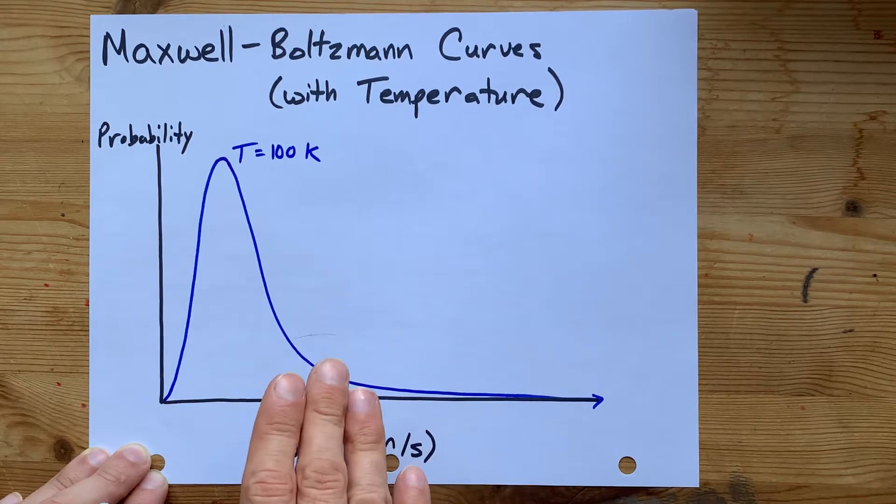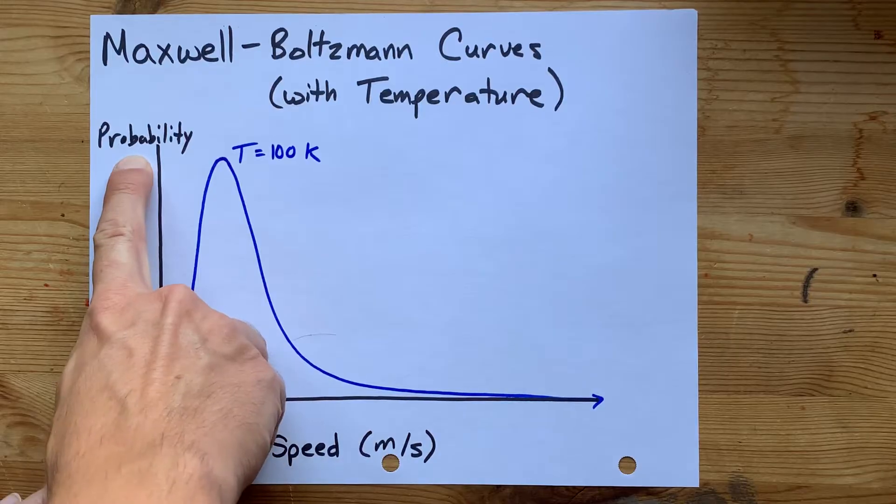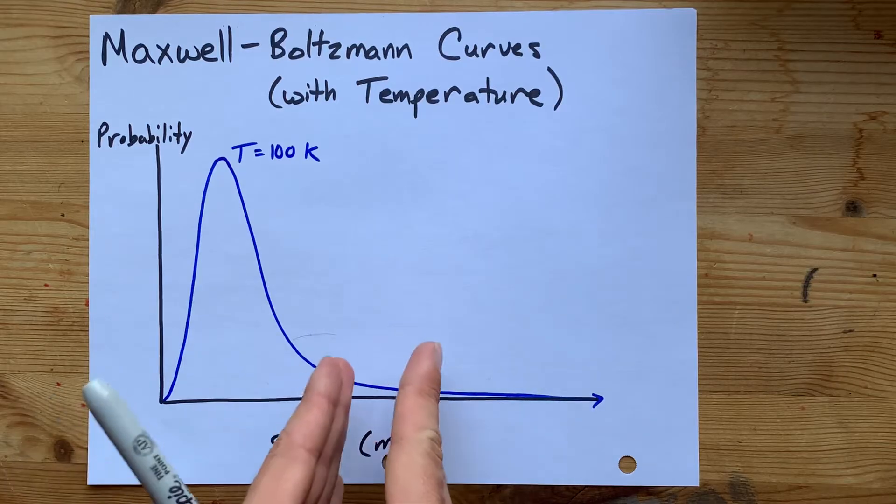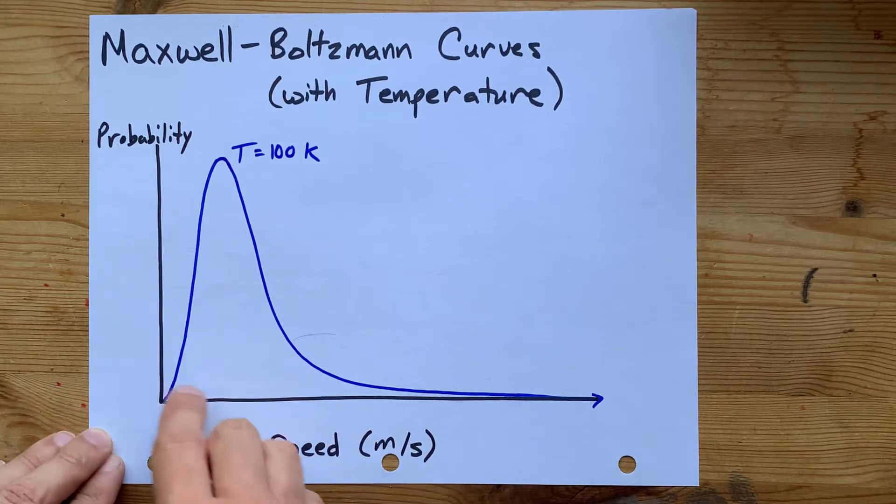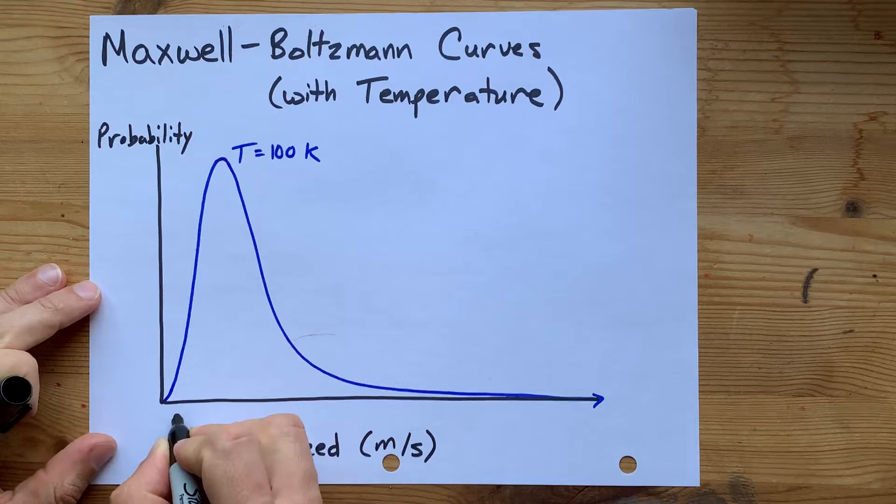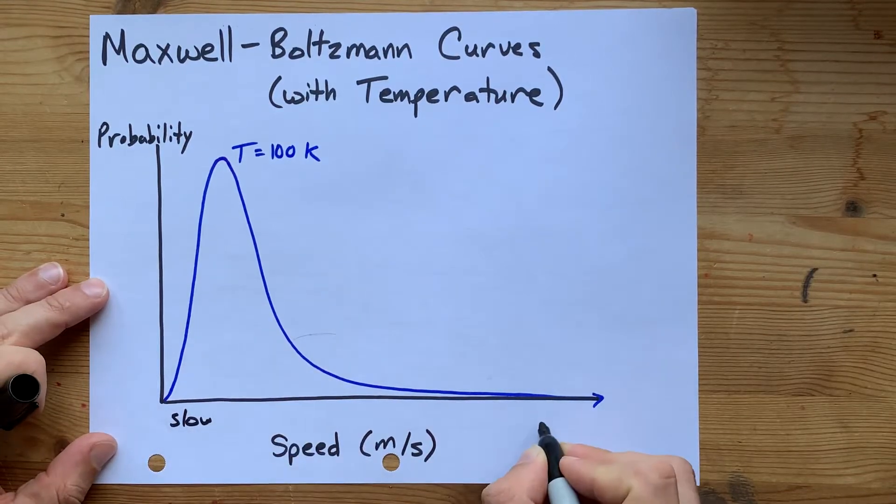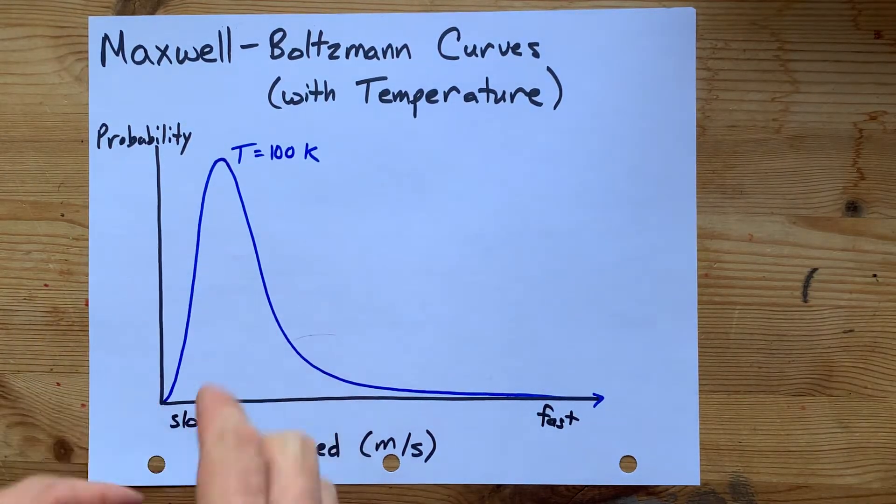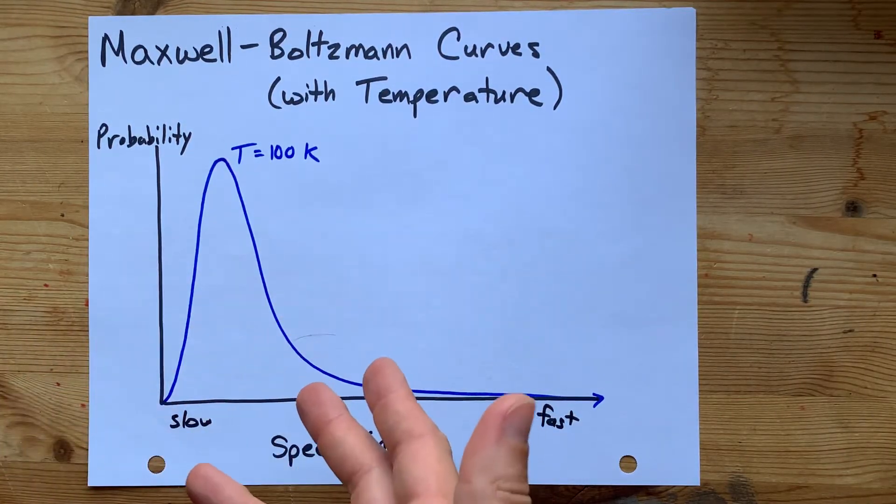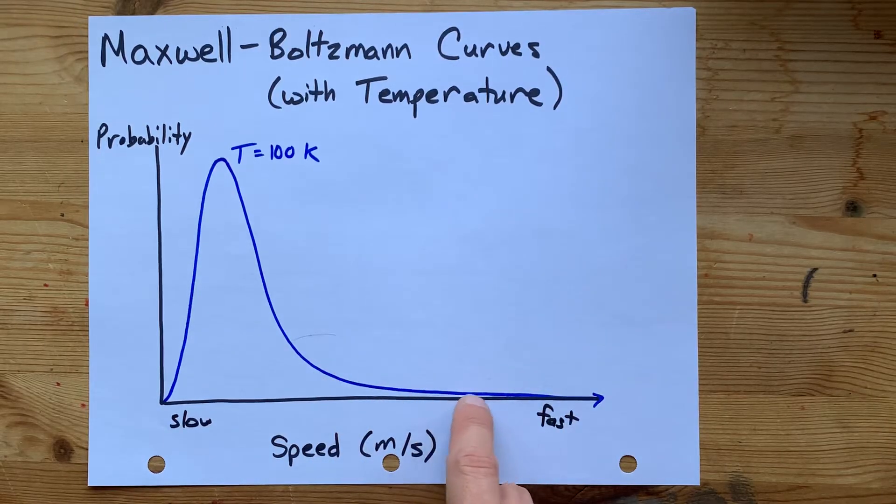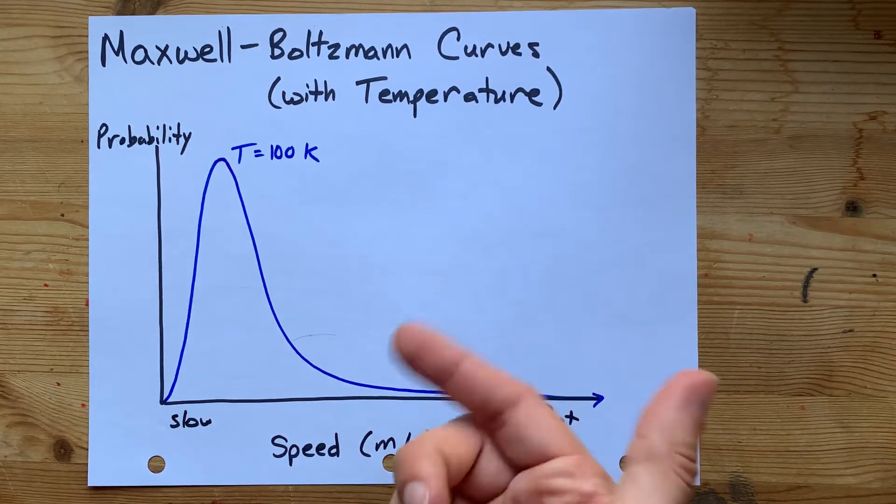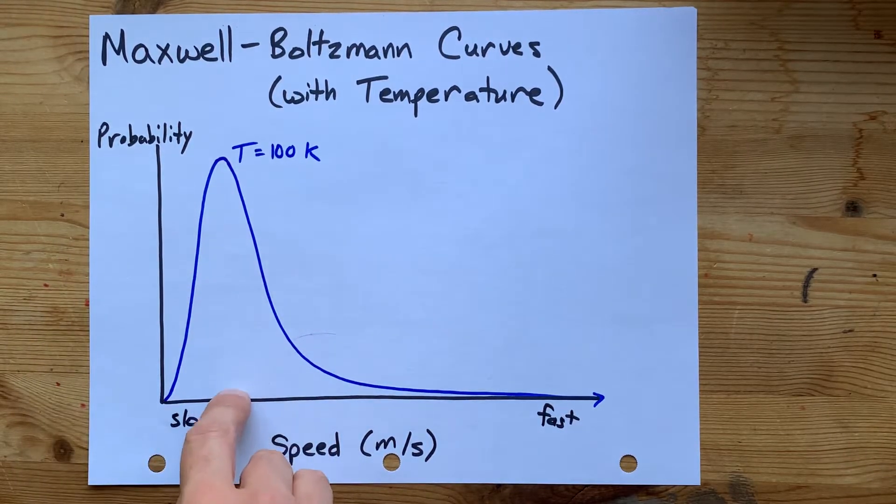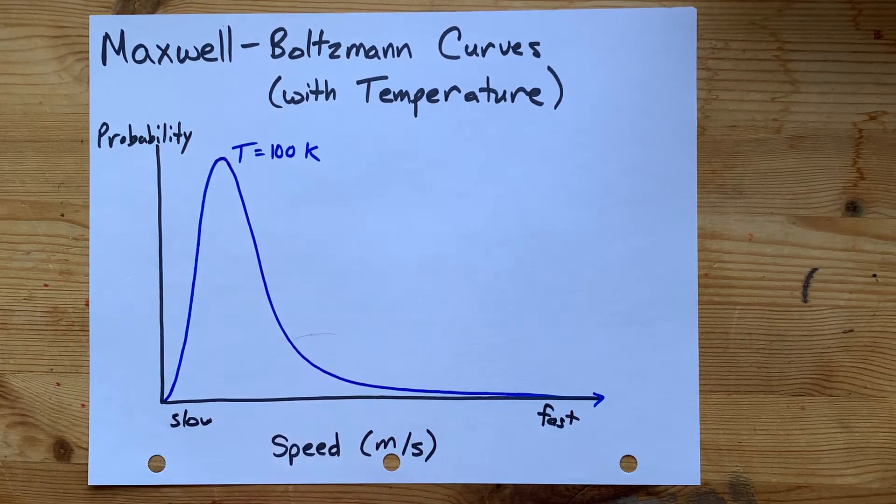What we are doing is plotting how probable it is that a particular molecule is traveling any particular speed. So to the left is slower speeds and to the right is faster speeds. At cold temperatures, more of the molecules are traveling at slower temperatures, although it isn't impossible for a couple of the molecules to be traveling at a fast speed. And so we say that the probability has a peak here at the low temperatures.